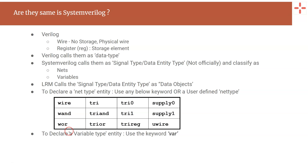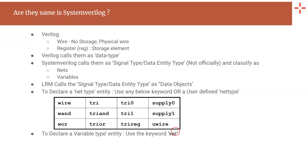And in the same way, if you want to declare a variable type data entity in SystemVerilog, you have to use the keyword var. At this point this might look quite confusing, but it will be very clear when you look at the next slide, where you will see the syntax to declare these two data entity types.